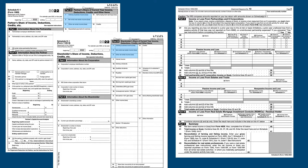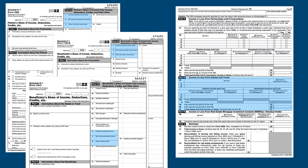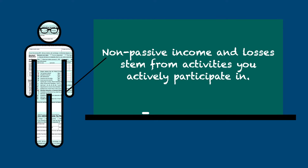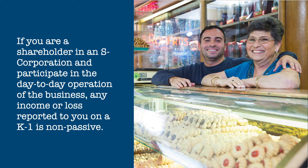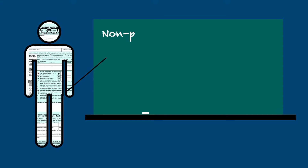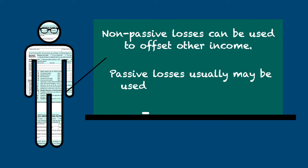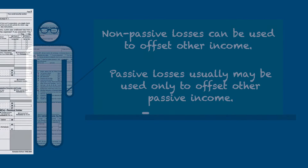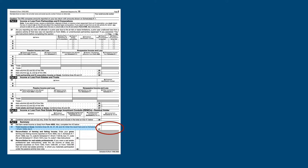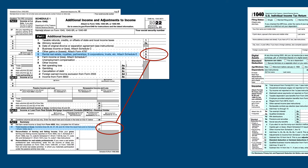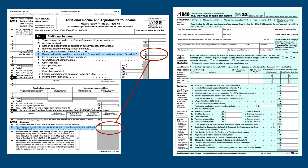Enter the information on income and losses for partnerships and S-corporations in Part 2, and income and losses for estates and trusts in Part 3. Income or losses from each K-1 are classified as passive or non-passive. Non-passive income and losses stem from activities you actively participate in. For example, if you're a shareholder in an S-corporation and participate in the day-to-day running of the business, any income or loss reported to you on a K-1 is considered to be non-passive. Many non-passive losses can be used to offset other income, but passive losses usually may only be used to offset other passive income. The income and losses from Schedule E are totaled and entered on Line 41 of the Schedule, and this total is then transferred to Line 5 of Schedule 1, which is added to all other income on Schedule 1, with the total showing up on Line 8 of your Form 1040.